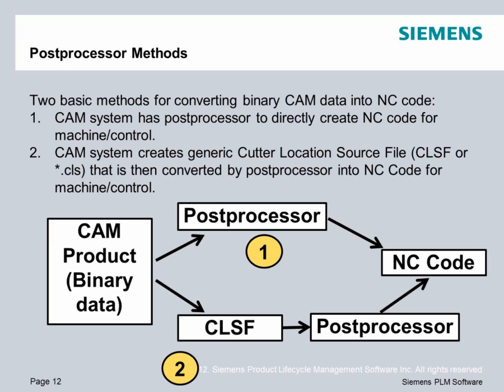Option one is the one-step method: the post-processor is delivered with the CAM system, and it creates the code directly for that specific machine or control. The second method is a two-step process, and generally a third party — not the CAM system vendor — will create the post-processor. What happens in this case is the CAM system simply creates a generic cutter location source file, or CLSF, and then that CLSF is converted by the post-processor into NC code for that machine or control. I think method one is better, because you can grab data and information that's not available in any CL source file.